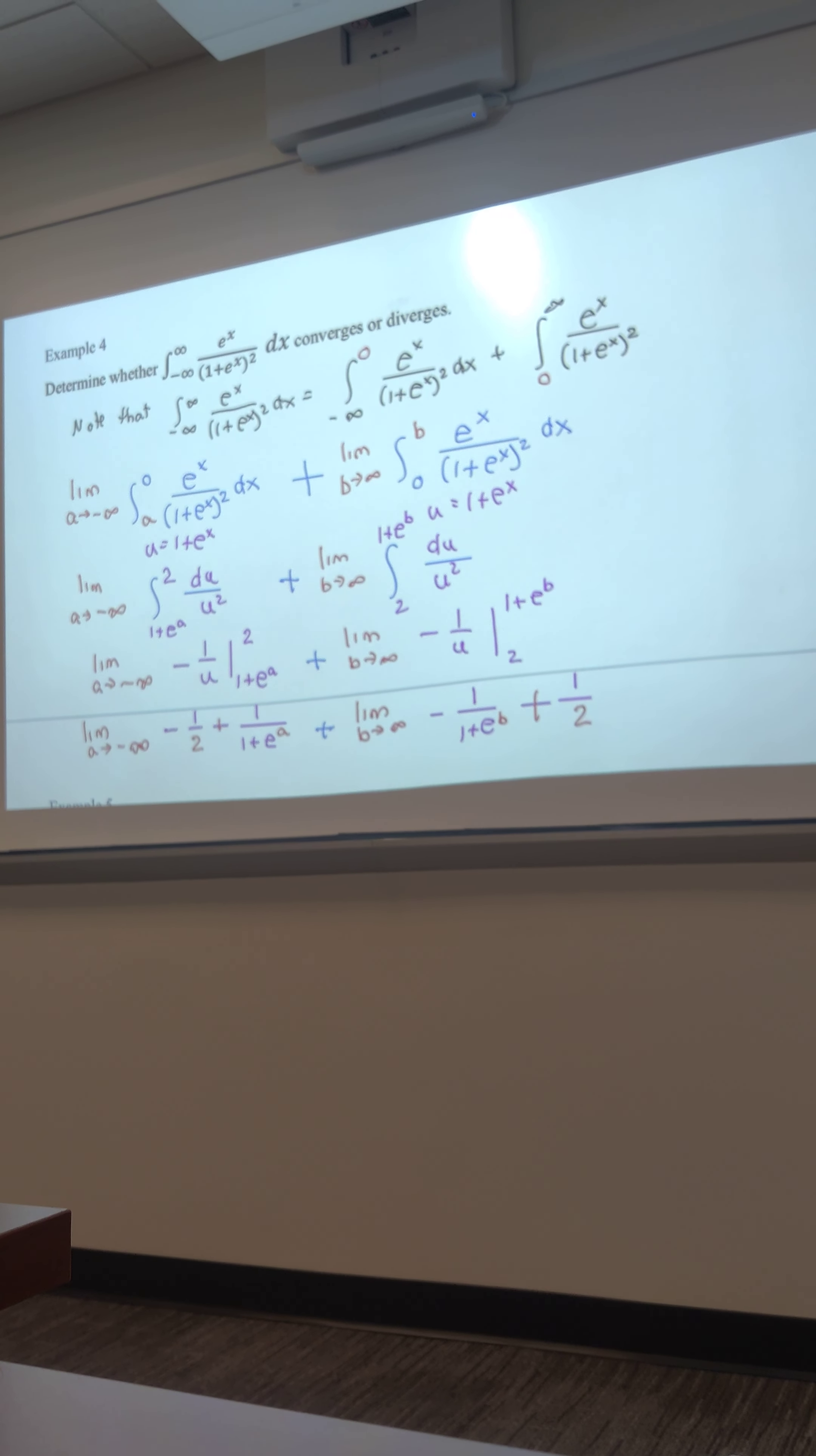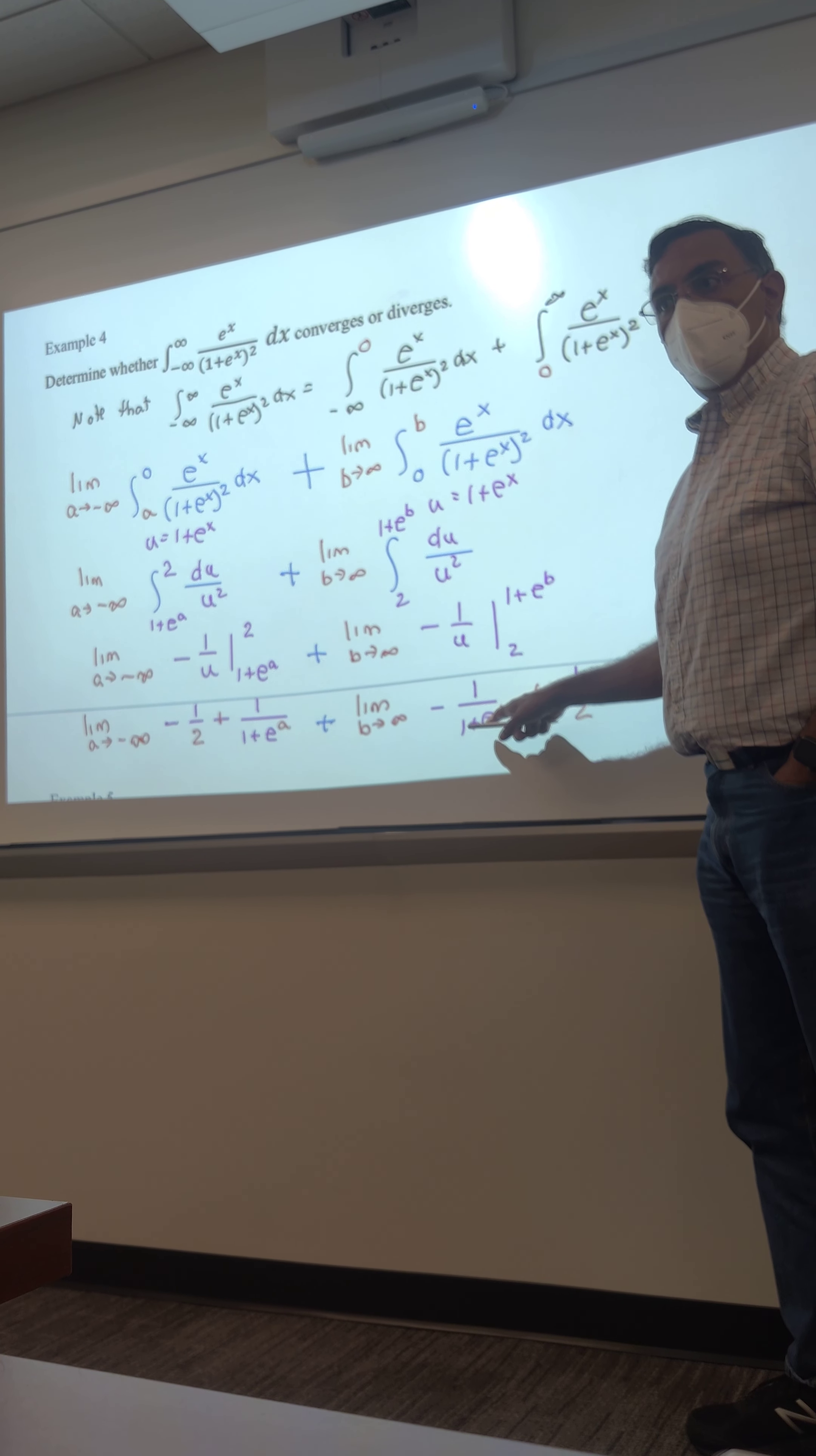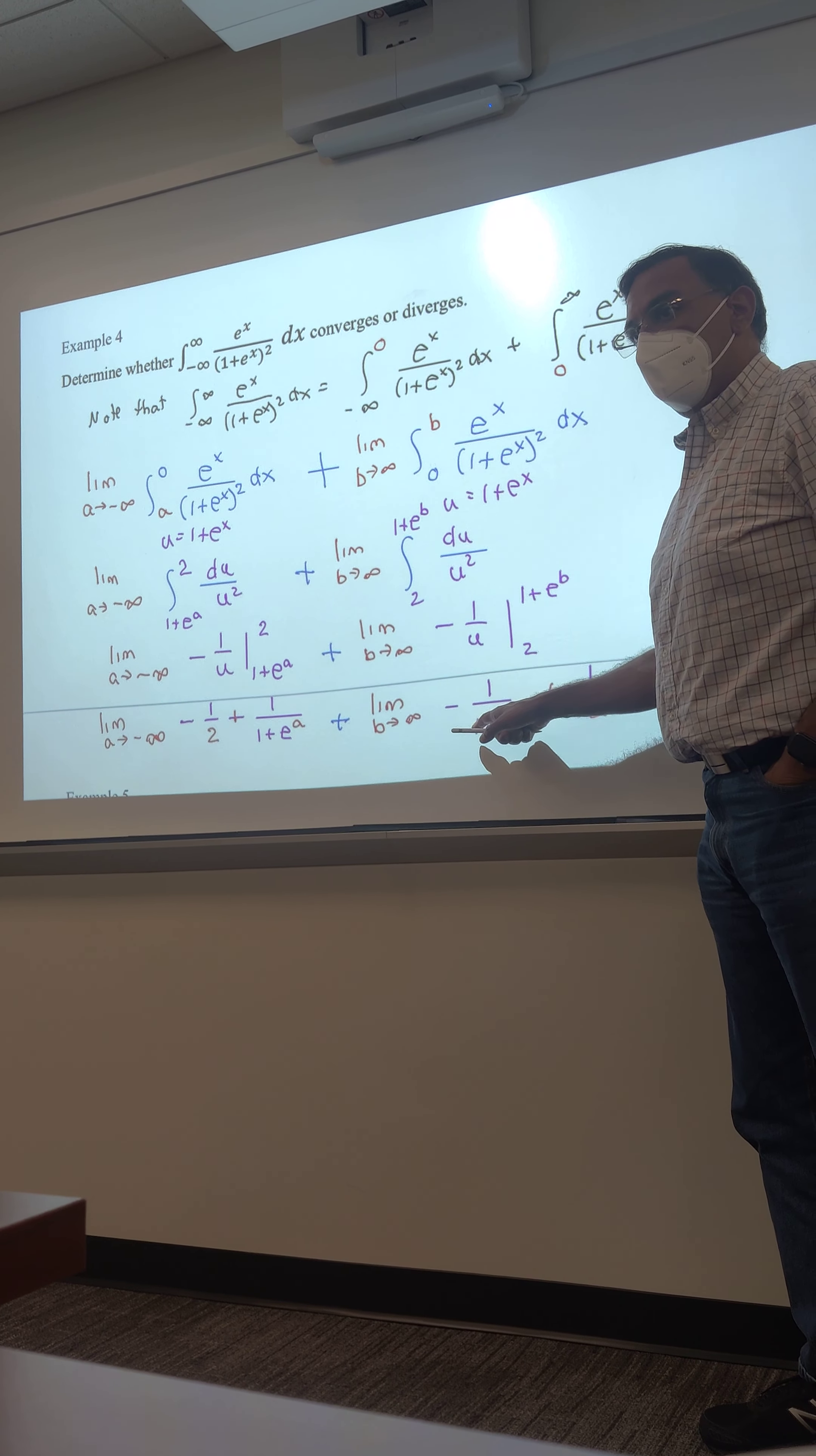Now, let's look at the other limit. This b is going to infinity. Take a look at this. This is e to the 100, e to the 1,000. What's happening to this fraction? e to the 1 is 2.67. So, it would already be 1 over 3.67, right? If it's e to the 10 or e to the 100, this denominator is getting very, very, very big, which means the fraction, 1 over that very big number is getting very, very, very small. This becomes 0 plus 1 half.